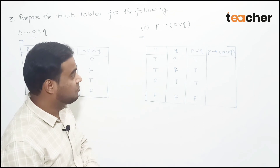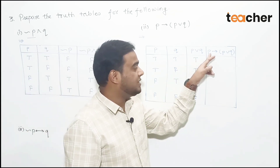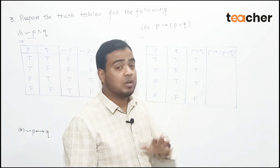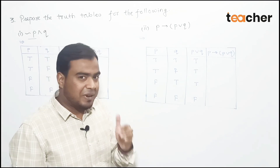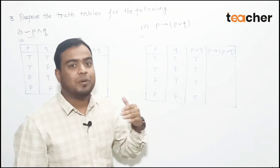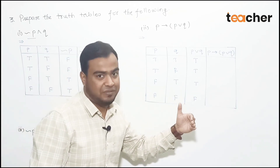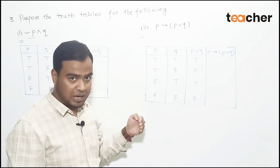For implication: P disjunction Q is the hypothesis and something is the conclusion. The key rule is: if hypothesis is true and conclusion is false, then implication is false; otherwise all other cases are true.